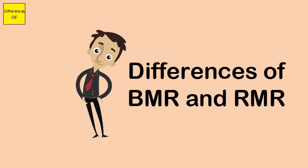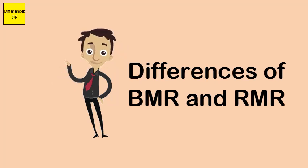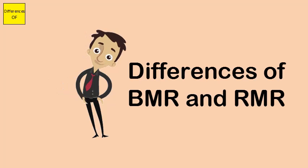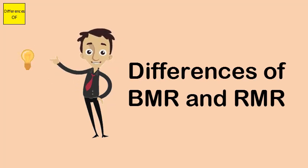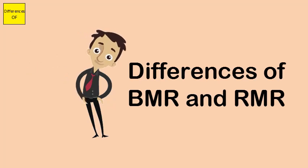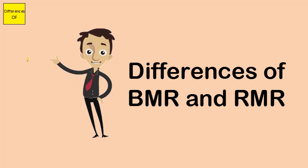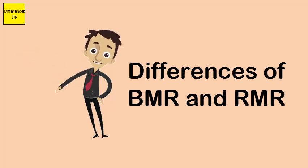BMR requires the person to stay at the testing facility, while RMR can be conducted wherever the person stays. BMR requires 12 hours of fasting; RMR requires no fasting. As for similarities, both are rates used to estimate the amount of calories a person will burn if at rest for 24 hours, and both are conducted the same way.